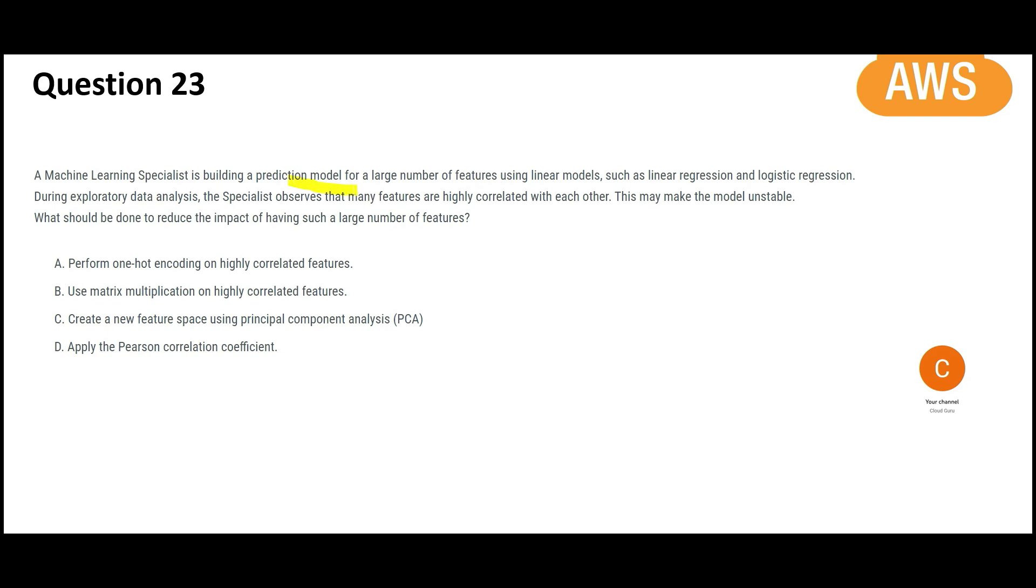You are building a prediction model for a large number of features, and you find out that the features are very highly correlated. Now you have to reduce the impact of such large number of features. What do you do?